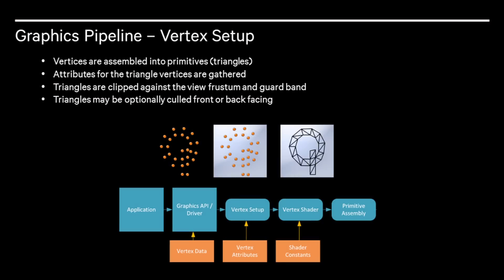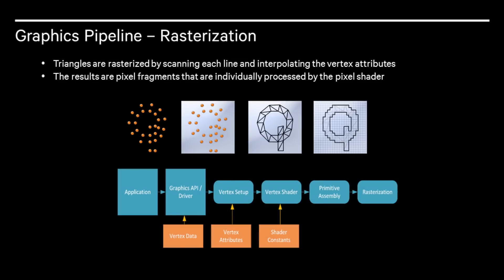The driver assembles the transformed vertices into triangles. This is either done with the ordering of the vertices or with a separate buffer describing the connection of the mesh. Attributes for the vertices are collected as well. The triangles are then clipped against the frustum and the guard band. Triangles can be optionally culled and removed if they are front or back facing. Now the graphics hardware rasterizes the triangles. A scanline algorithm, which works by processing the triangle row by row, is generally used. Each pixel, now called a fragment, which is covered by the triangle, is then sent to be further processed.